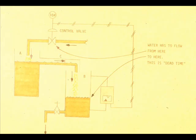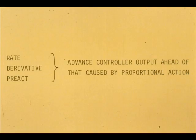Some control loops, having lags and dead time, can be better controlled if the control valve position is advanced beyond that caused by proportional action. Rate, derivative, or pre-act will perform this feat.